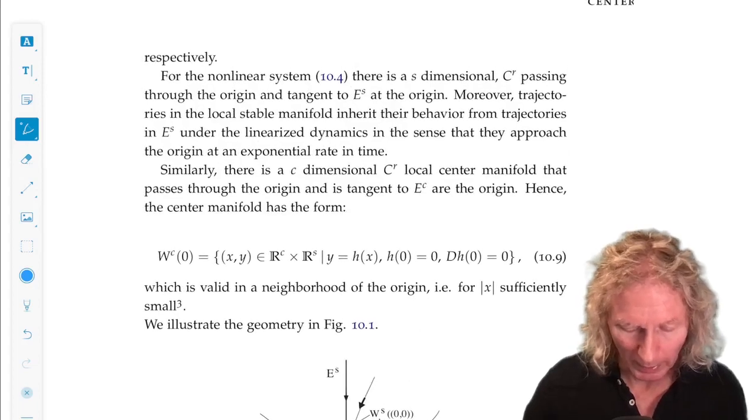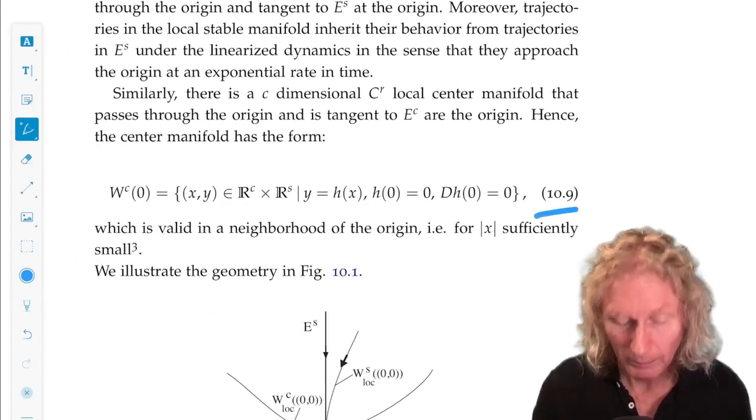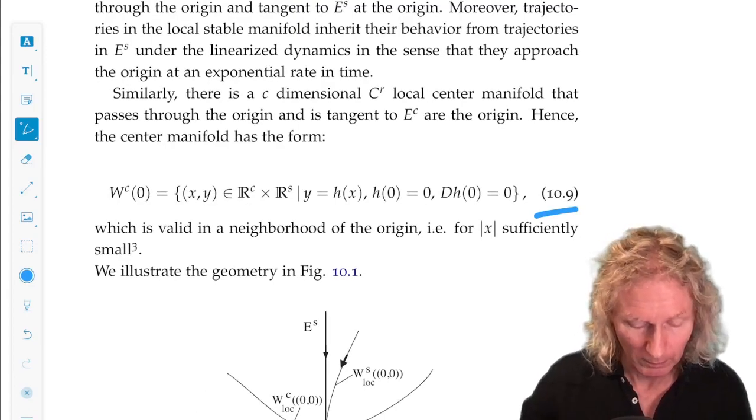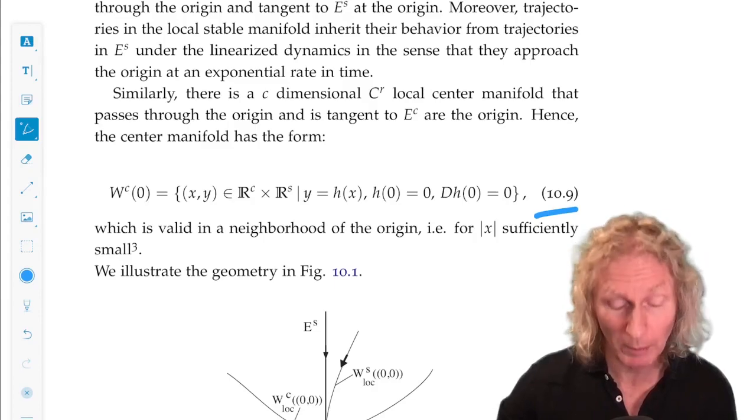Okay, last time I talked about the existence and the form that the center manifold takes as a graph over the center subspace, tangent to the center subspace of the origin, passing through the origin.